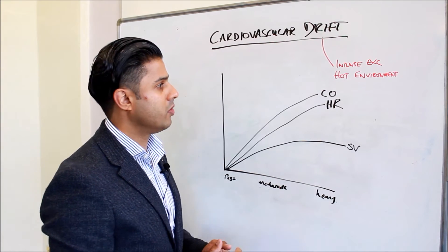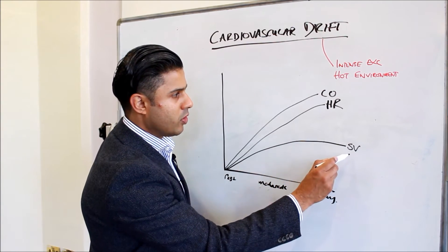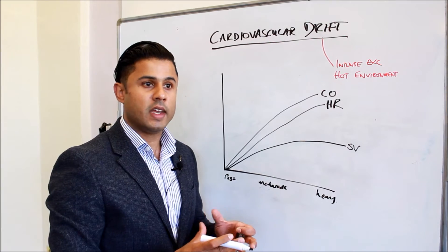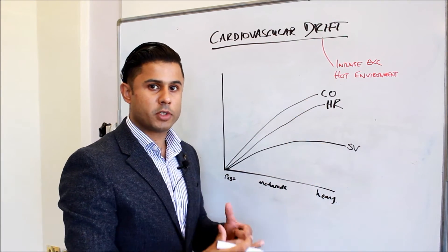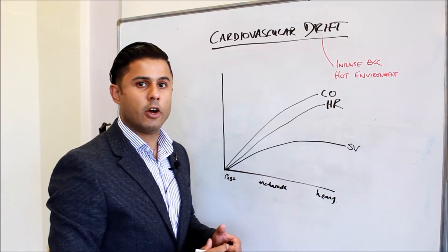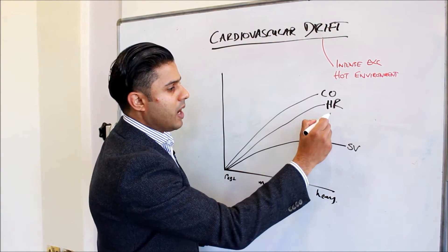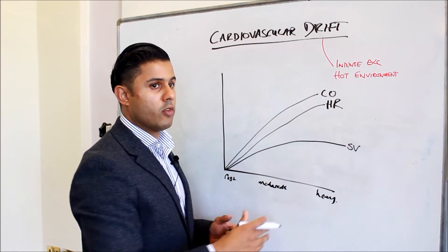The stroke volume will actually start to tail off and you also start to get changes in the mean arterial pressure. We know that stroke volume and heart rate are related and they determine the cardiac output. If we have changes in one, the other must compensate to maintain cardiac output. In this case we're having a reduction in stroke volume so heart rate increases.